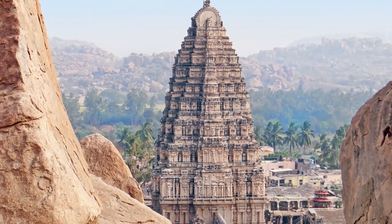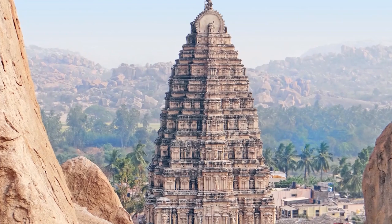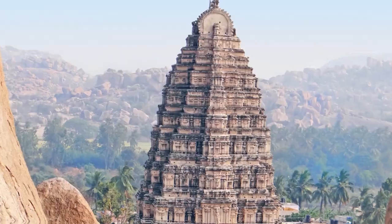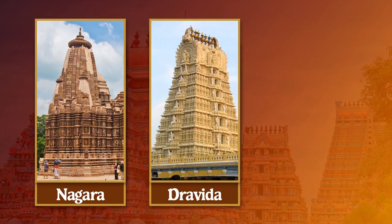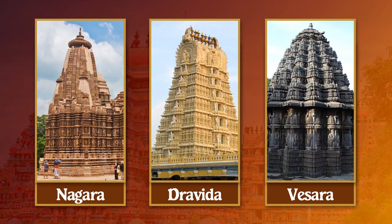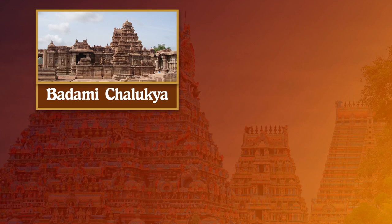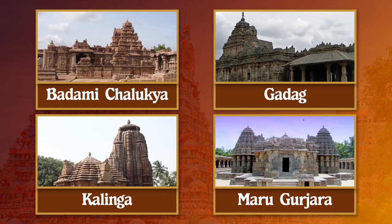Ancient Indian temples are classified into three broad categories based on the different architectural styles employed in their construction. The three major styles are the Nagara or northern style, the Dravida or southern style, and the Vesara or mixed style. There are also regional styles such as Badami Chalukya and Gadag architecture in Karnataka, Kalinga architecture in Odisha, and Maru-Gurjara temple architecture in Rajasthan.